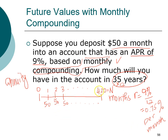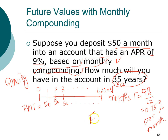Now we have all the information we need: investment horizon of 420 months, interest rate of 0.75% per month, and annuity payment of $50. Since the question asks how much you'll have in the account in 35 years, we're solving for the future value. Let's use the financial calculator.